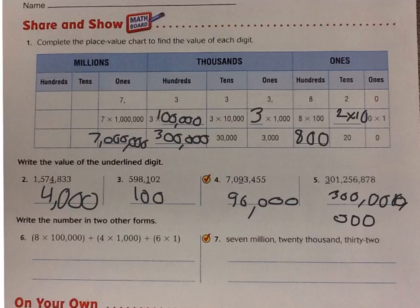The last thing I want to point out is 'write the number in two other forms.' Some people might get in trouble because they only write it in one other form — they do need two others. So if we have our standard, our expanded, and our word form, you look at which one they give you and you write it in the two other forms.